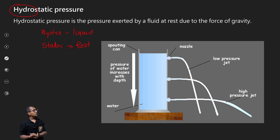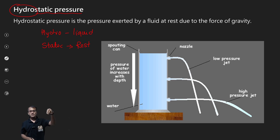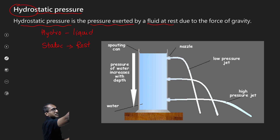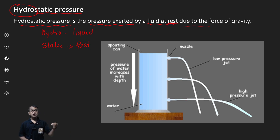So, hydrostatic pressure means liquid which is at rest exerts some pressure on the surface. It is called hydrostatic pressure. So hydrostatic pressure is the pressure exerted by a fluid at rest due to the force of gravity. The reason behind that pressure is the force of gravity.